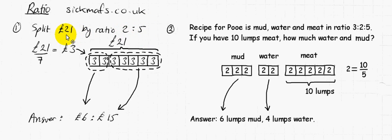For example, my £21 here, I'm going to split it up in the ratio 2 to 5, which means, in reality, because 2 plus 5 makes 7, I'm going to cut it up into 7 pieces and then send 2 of the pieces one way and 5 of the pieces the other way.